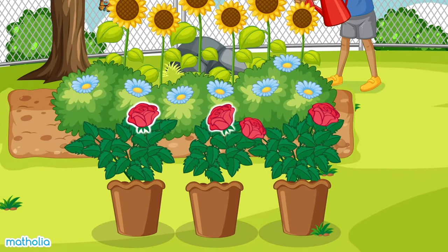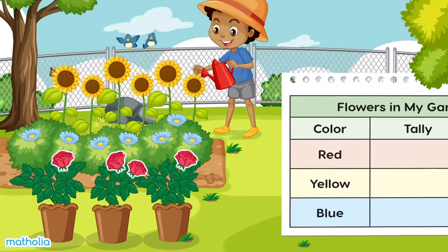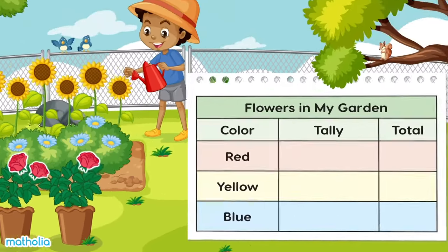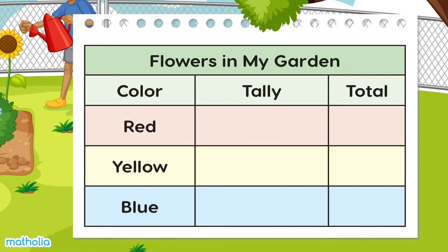One, two, three, four. There are four red flowers. We can show four red flowers by drawing four marks like this.